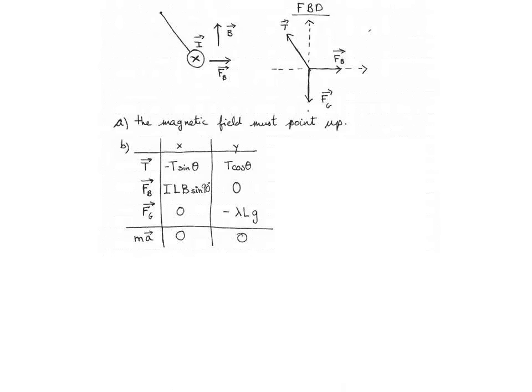And when we add up all the forces, we know that that should be equal to the mass times the acceleration, which is zero for something that is in equilibrium. We'll start by writing Newton's second law in the y direction. So adding up all the forces in the y, we get T cosine theta minus lambda Lg, and that has to be equal to the mass times the acceleration, zero.